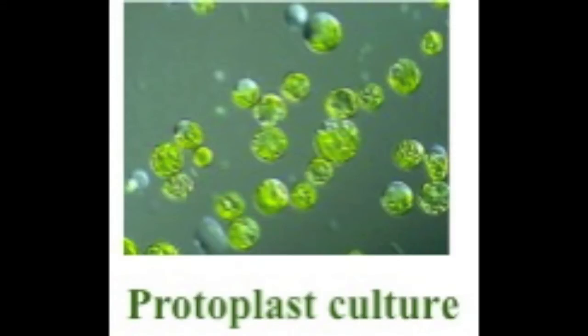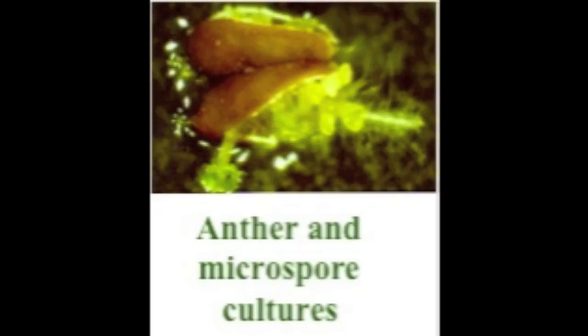Protoplast culture consists of cells without cell walls. It is obtained from leaf mesophyll or crown cell suspensions. Protoplasts are fragile and therefore must be cultured carefully without agitation, with high osmotic potential maintenance. The use of protoplast culture is ideal for transformation.